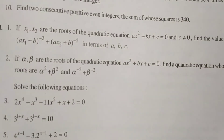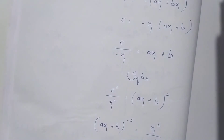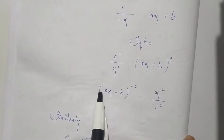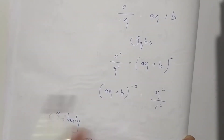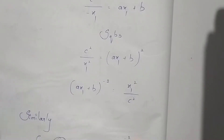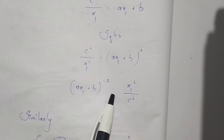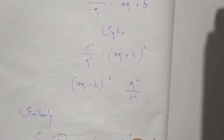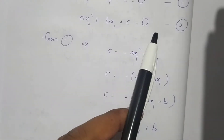Since the question asks for (ax₁ + b)⁻², we take the reciprocal to get (ax₁ + b)⁻² = x₁² / c². So we have obtained (ax₁ + b)⁻² = x₁² / c².